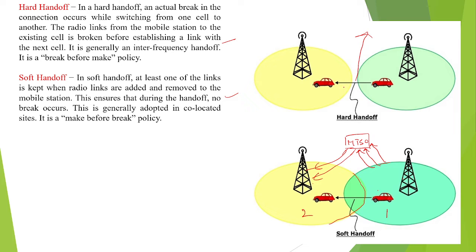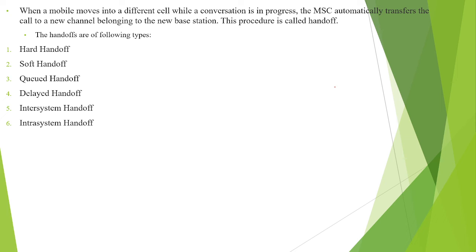But here, there is a break because there is no coverage area while moving from one cell site to another. If handoff takes place in this case, then it is called a hard handoff. There are different handoffs: soft and hard handoff. Queuing handoff, or delayed handoff, means it is a two-level handoff.